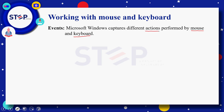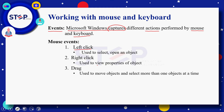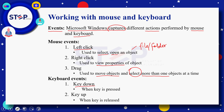Working with mouse and keyboard — جب بھی آپ mouse یا keyboard کے ذریعے کوئی بھی action perform کرتے ہیں تو Microsoft Windows ان تمام actions کو capture کرتی ہے اور وہ actions آپ کے events کہلاتے ہیں۔ Mouse events میں سب سے پہلے left click ہے جس کا main مقصد different objects کو select یا open کرنا ہوتا ہے۔ Right click آپ کے object کی properties view کرنے کے لئے use ہوتا ہے، جبکہ drag different objects کو move کروانے یا ایک سے زیادہ objects select کرنے کے لئے استعمال ہوتا ہے۔